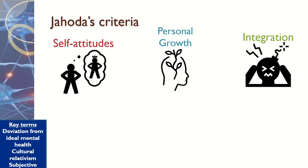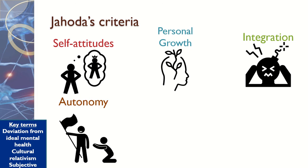The third criterion is integration — being able to cope with stressful situations. Although we all might find things stressful sometimes, we should have the ability and the resilience to cope with the situation. The fourth criterion is autonomy — being independent and self-regulating. This is something we might have heard about in education as being a self-regulated learner: someone who is able to work out and solve problems on their own. It doesn't necessarily mean you are completely independent of everyone else, but if you were left to your own devices, you would be okay to do so.